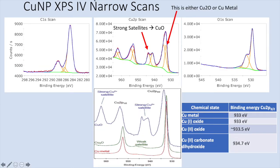These are the narrow scans. We already did the carbon 1S, which we used to shift the entire spectrum. I couldn't fit this with a purely single set of spectra or doublets. It has a large satellite, and I needed an extra peak here to fit this first peak — Cu2P 3/2. So the question is: is it Cu2O or Cu metal?